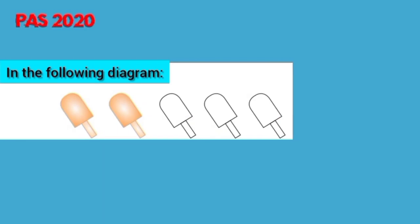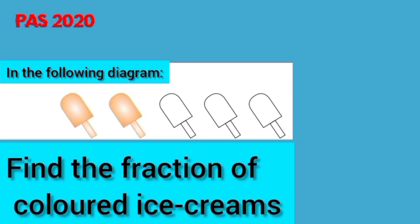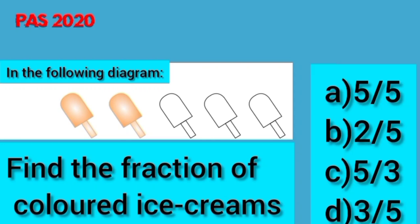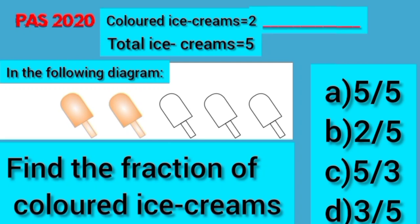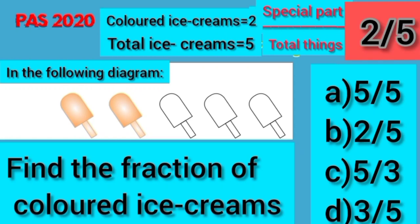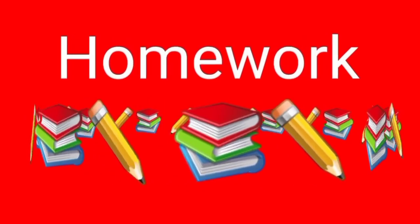It's time for pass preparation. In the following diagram, find the fraction of colored ice creams. Option A is 5 upon 5. Option B is 2 upon 5. Option C is 5 upon 3. Option D is 3 upon 5. Dear students, here we have a total of 5 ice creams. Out of these, 2 ice creams are colored. So the fraction of colored ice cream is the special part upon total things, which is 2 upon 5. So dear students, our answer is option B, 2 upon 5.